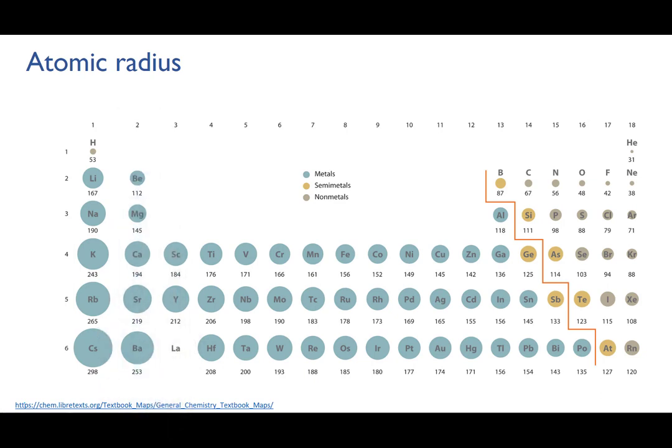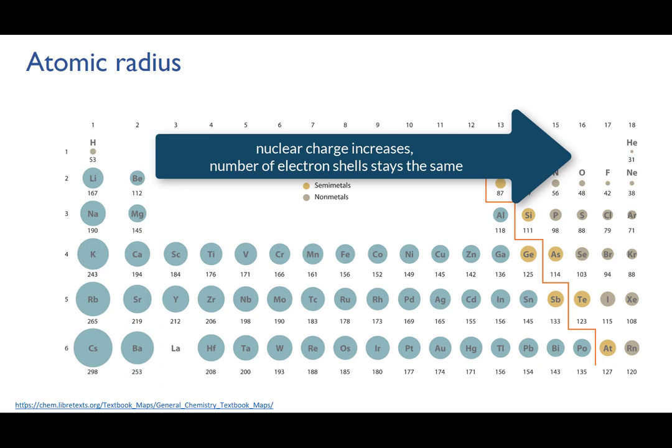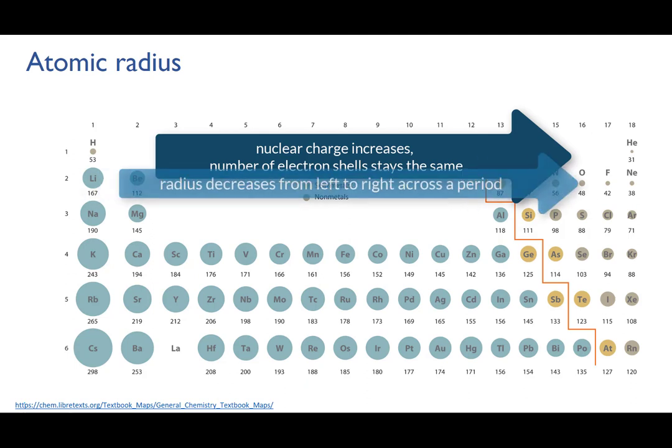Going across a period, the number of electron shells in the atoms stays the same, because they're all in the same period, they all have the same valence shell. So no change there. But simultaneously, the number of protons in the nucleus is increasing. So the electrons are pulled more tightly in, and the atoms get smaller.